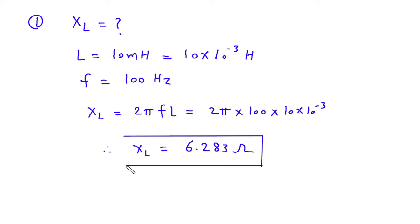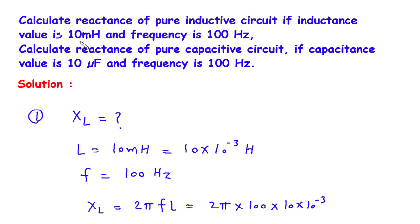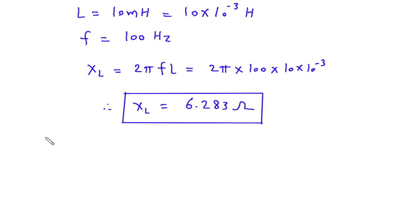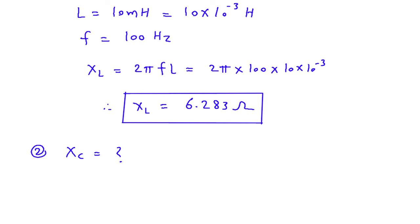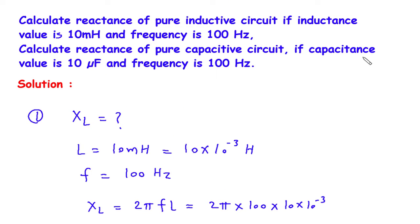Next, we have to find capacitive reactance. Calculate reactance of pure capacitive circuit, that is we have to find XC. What is given: capacitance value is 10 microfarad and frequency is 100 Hz.